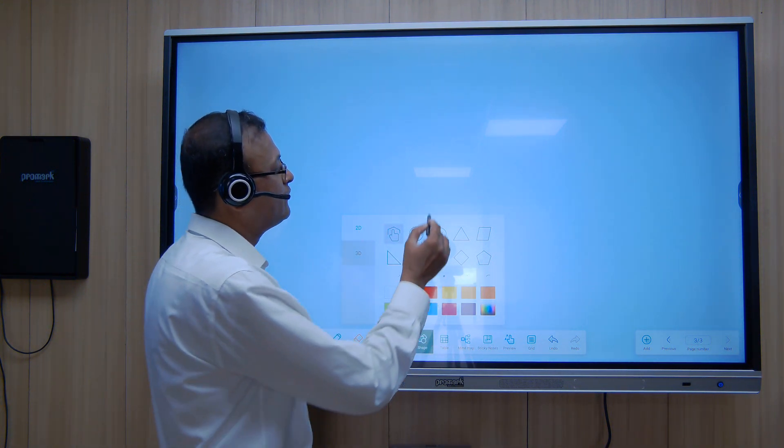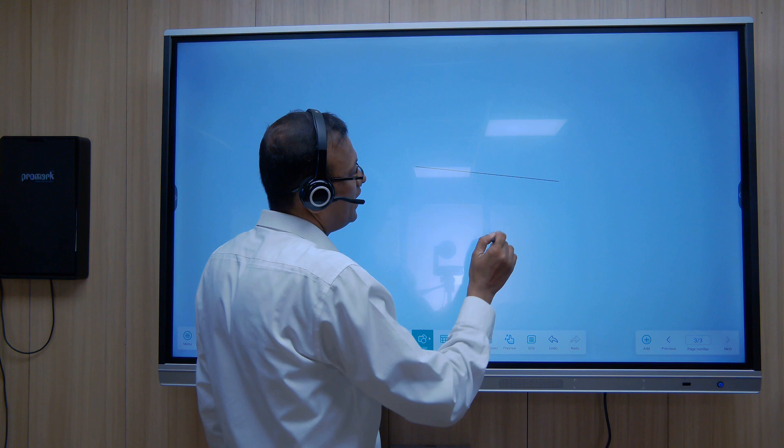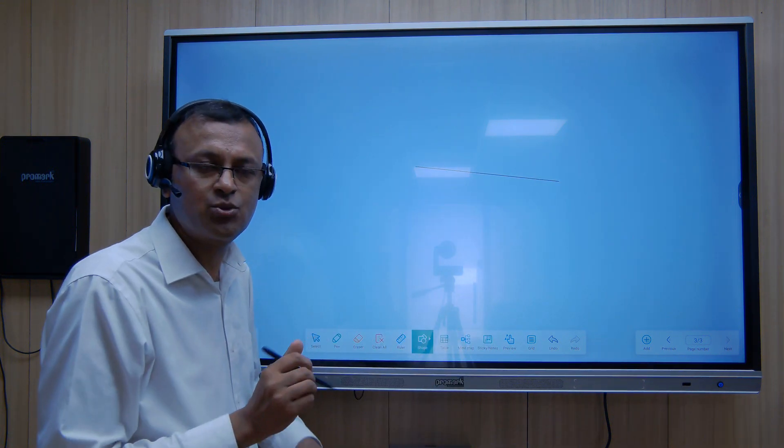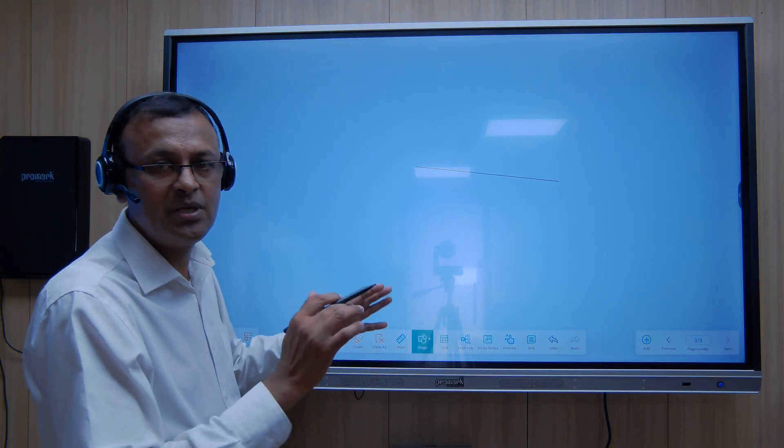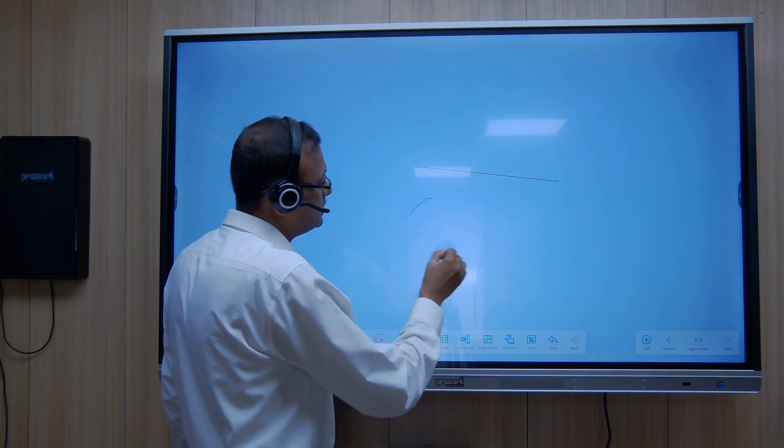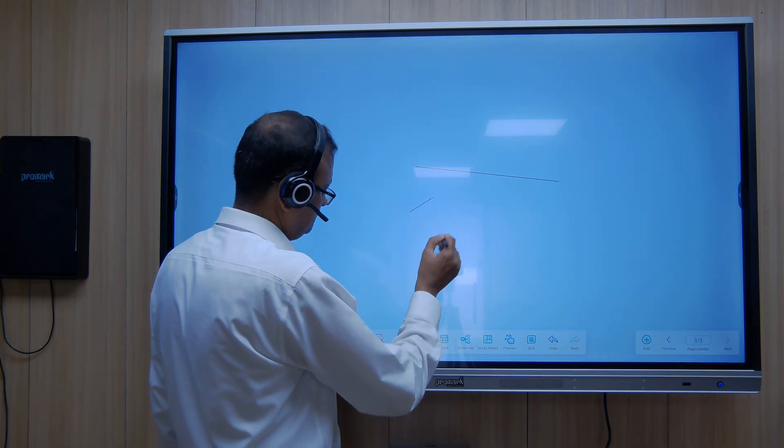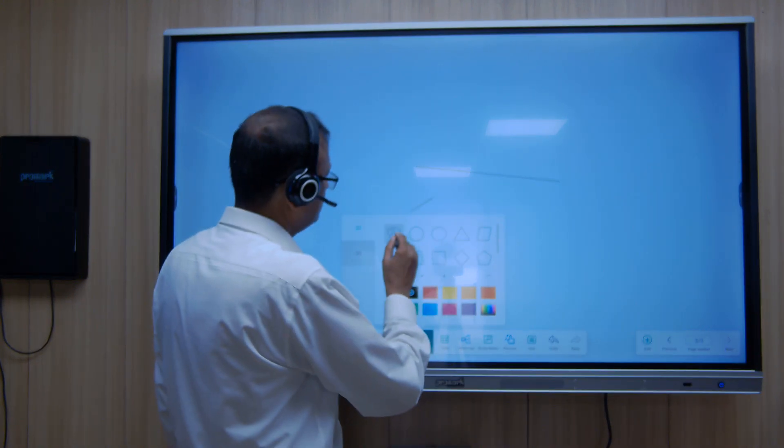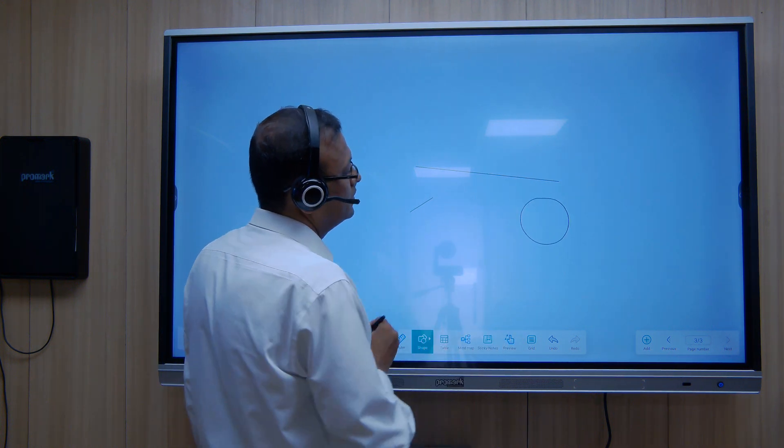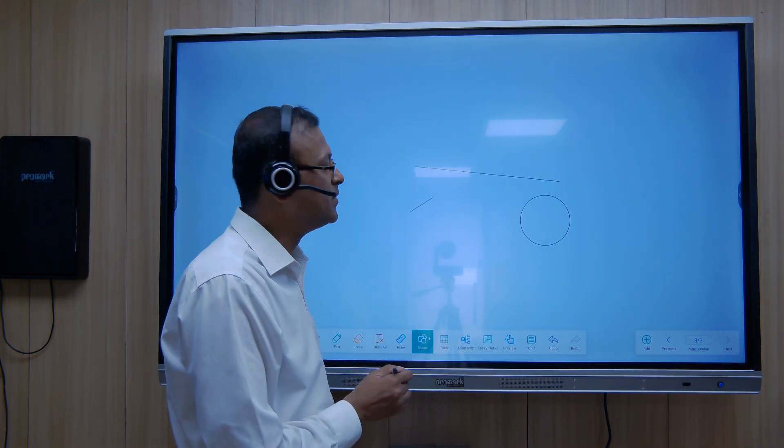Suppose I am trying to draw a line, the panel automatically detects what I am trying to draw and it gives me a perfect picture. If I am drawing a circle, it detects and brings me a perfect circle.